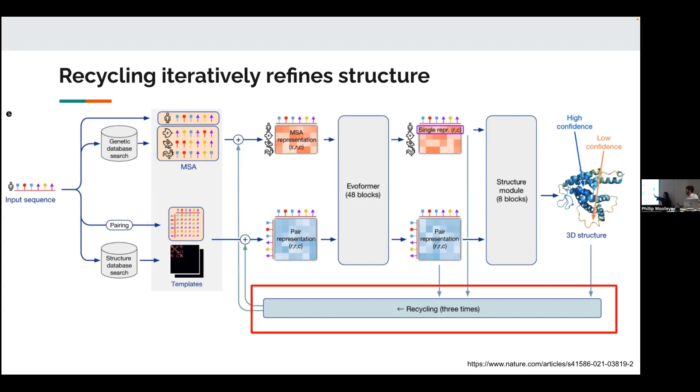And so I think what it does is it takes the sort of last instances of the pair representation and the MSA representation from the structure module and recycles that back into it. So you're not actually taking the 3D structure, you're taking these matrices that have already gone through the structure module and then inputting them at the beginning. So kind of like 3D model. From what I understand. And I couldn't find a clear answer on this, but I'm pretty sure it either like will reset a new backbone or use the backbone that it already has. So I couldn't find a clear answer on what it's doing in the backbone.